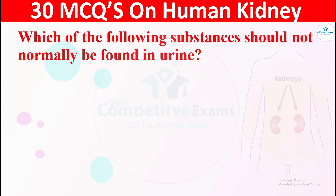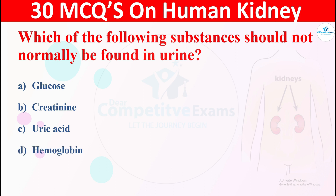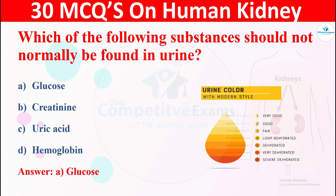Question 15: Which of the following substances should not normally be found in the urine? The options are: A) glucose, B) creatinine, C) uric acid, or D) hemoglobin. The correct answer is glucose. Glucose should not be present in normal urine.